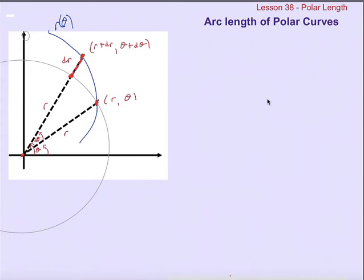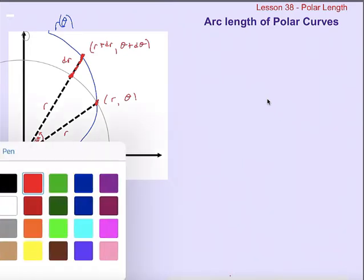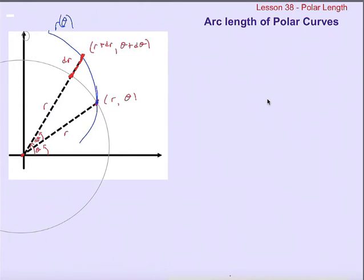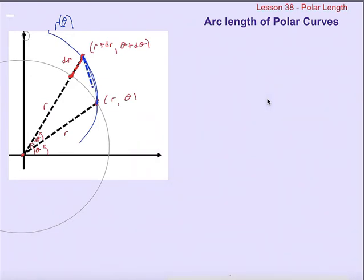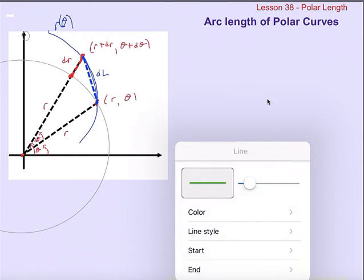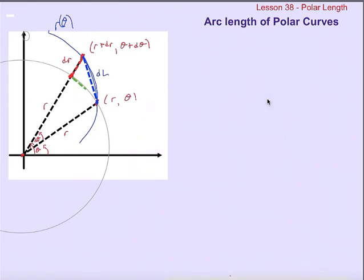The arc length from one point to the other around the polar curve—imagine this was a small enough arc length so that it was essentially straight. Remember, we're going infinitely small, so we can think of it as a straight line. That straight line has a name: it's dL, the tiny incremental change in arc length.